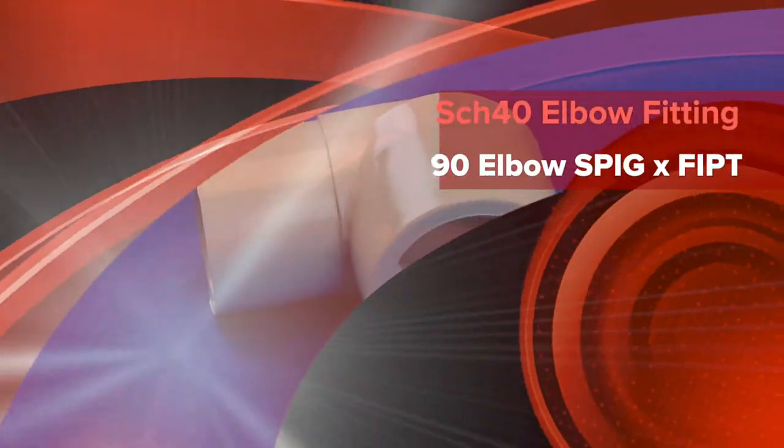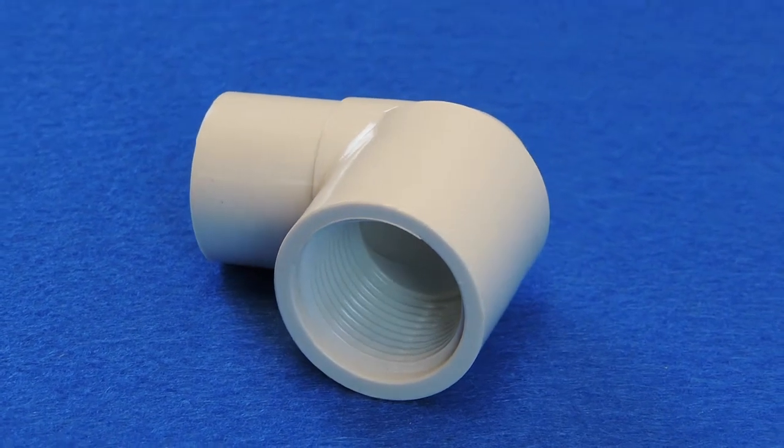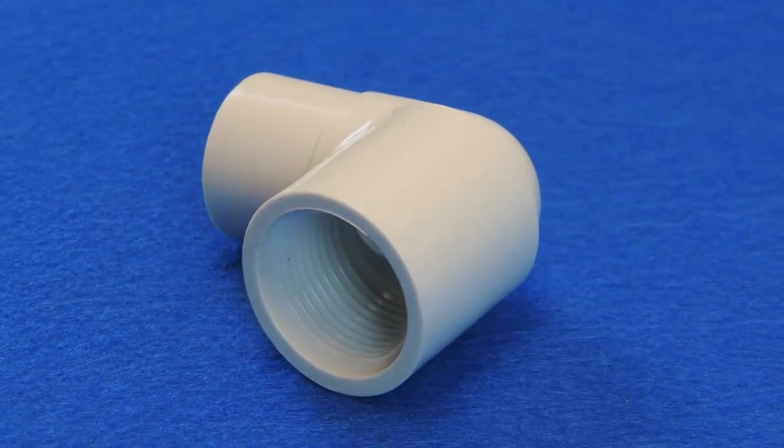This is a schedule 40 90 degree spig foot street elbow. A street elbow has a female fitting on one end and a male fitting on the other end.